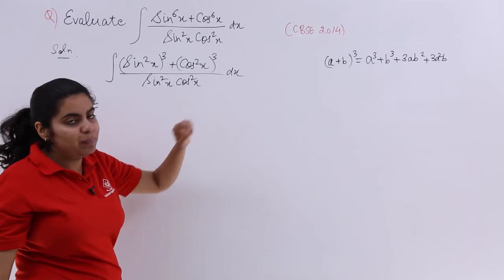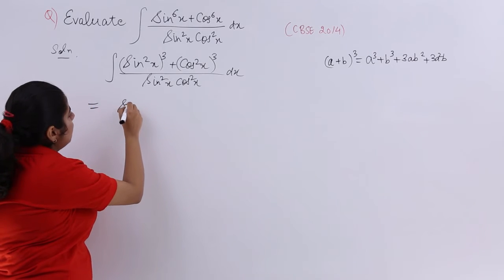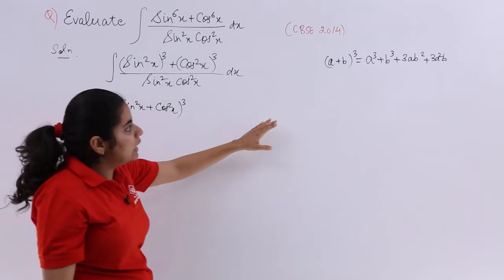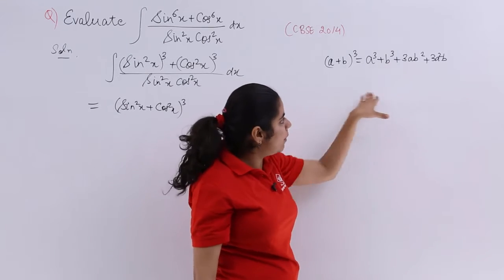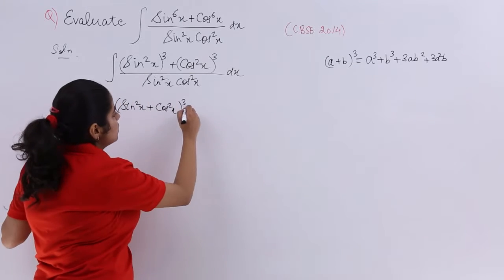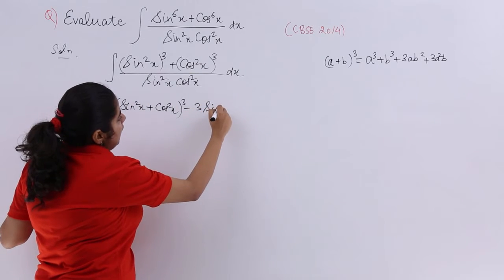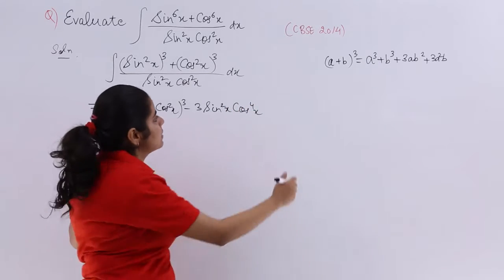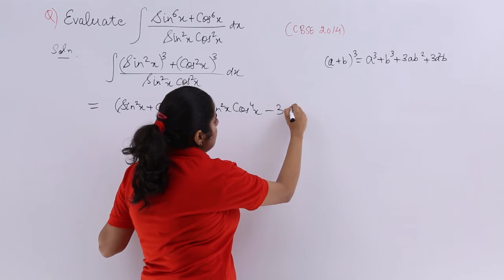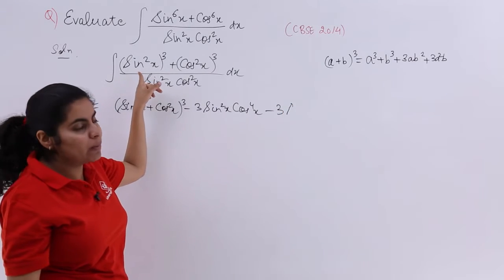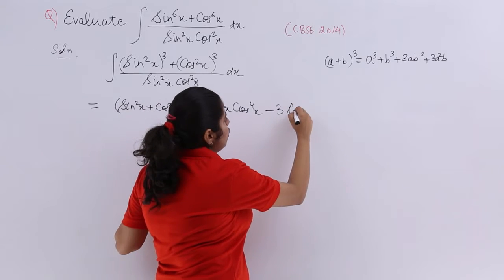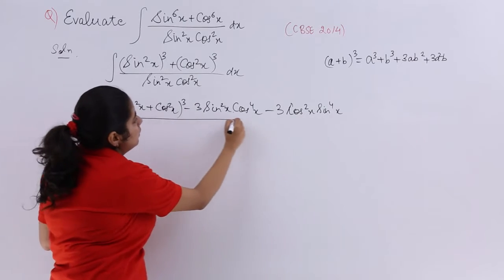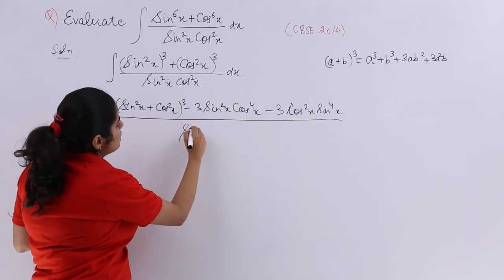So it is nothing but a plus b whole cube. The a is my sin square x plus b whole cube. Then for a cube plus b cube minus 3ab, it is minus 3 sin square x cos square x minus 3 cos square x sin raised to the power 4x upon sin square x cos square x.